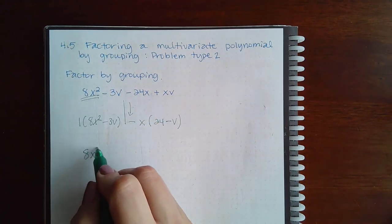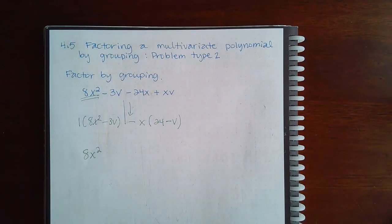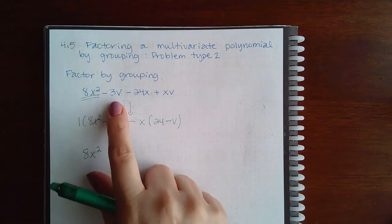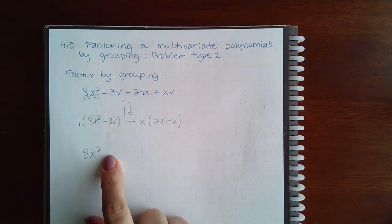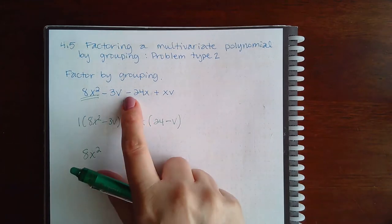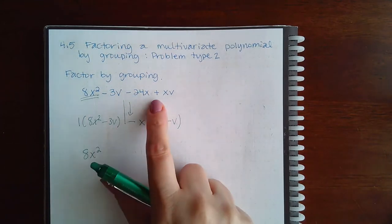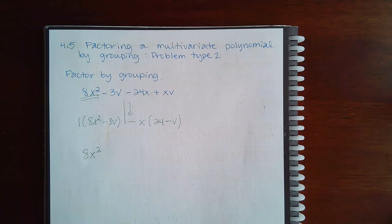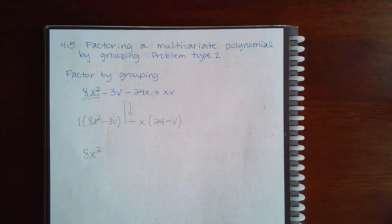So you obviously do not want to have that next to it because that was the problem the last time, right? So you definitely want to have negative 24x or positive xv next. How do you choose? Choose one that has something in common with 8x squared.